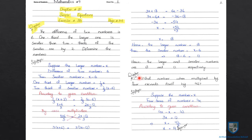Next है Question number 12 of Exercise 11B। What number when multiplied by 4 exceeds itself by 42? किस number को जब हम 4 से multiply करें, और multiply करने के बाद उसमें से वही number subtract करें, तो answer 42 के equal आना चाहिए। Solution: Suppose the number is equal to x.